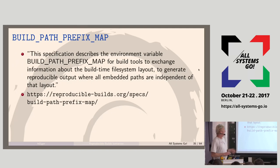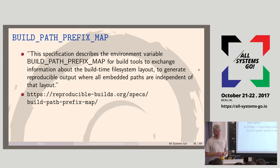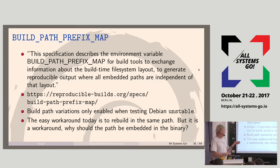For this we came up with a second specification: build-path-prefix-map. This specification describes an environment variable for build tools to exchange information about the build-time filesystem layout to generate reproducible output where all embedded paths are independent of the layout. Our biggest problem is we have a patch for GCC — because GCC also embeds the path — but the GCC maintainers are not happy with the implementation and we are discussing with them. The workaround is simple: just rebuild in a deterministic path. But why should the path be embedded in the binary at all? It can also have privacy implications — if you build in /home/projects/secret-project, you don't want that leaked into the binary.